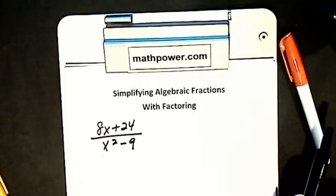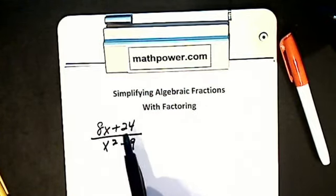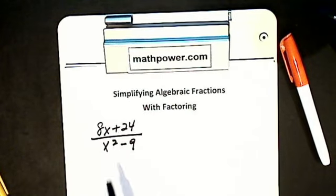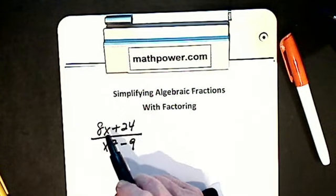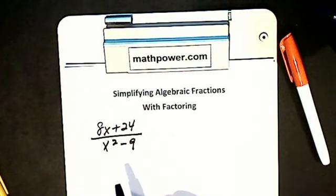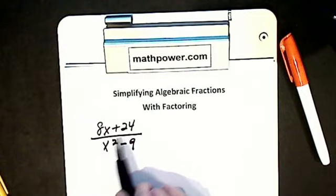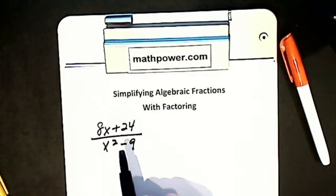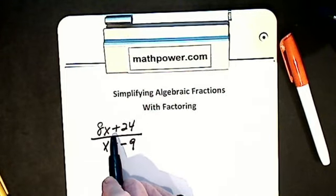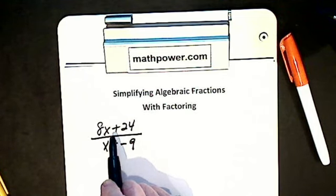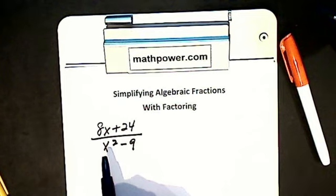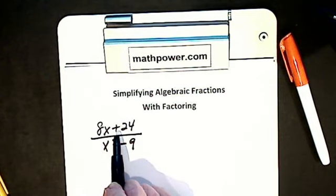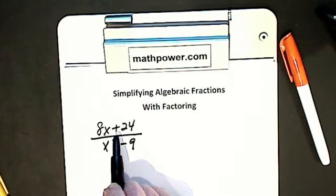Let's do a couple more. I have to simplify this fraction. I am not allowed to cancel my x into my x squared, not allowed to go 3 into 9 and 3 into 24, because I have terms. In division, I can only cancel factors, not terms. Factors are things we multiply; terms are things we add or subtract. I look at my numerator — is it greatest common factor, difference of two squares, or a trinomial? It's not a trinomial — trinomial is three terms, and I have two terms.